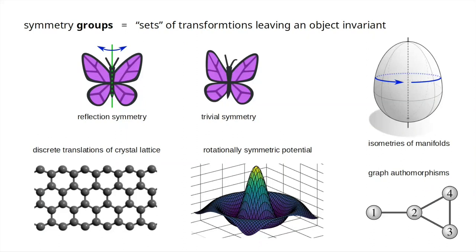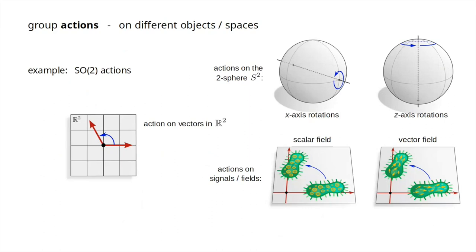One given group can act on different objects or spaces. For instance, the rotation group SO(2) in two dimensions could act on R² and rotate vectors in the plane, or it could act on a sphere by rotating it around different axes, or it could rotate something like an image or a vector field. The key point is that one group can act on different spaces.